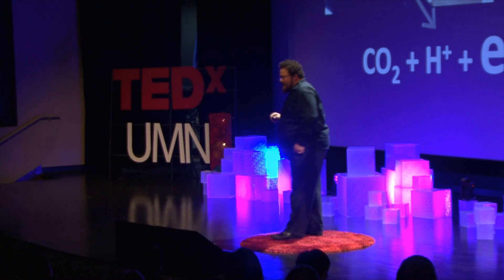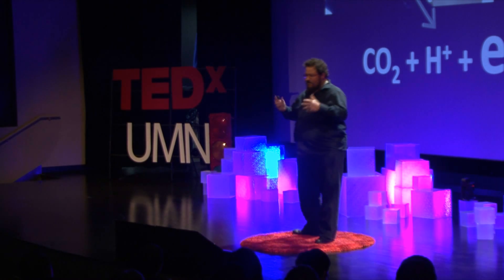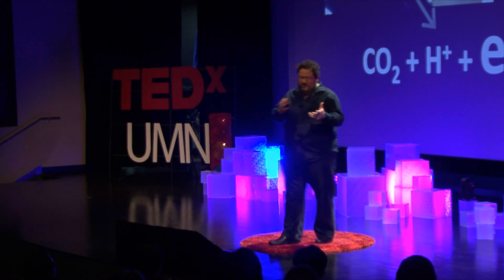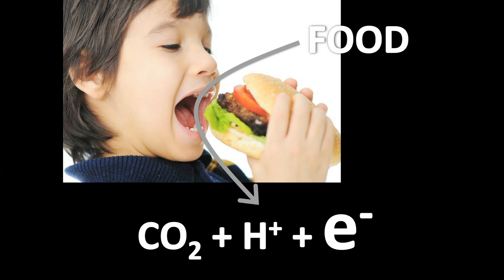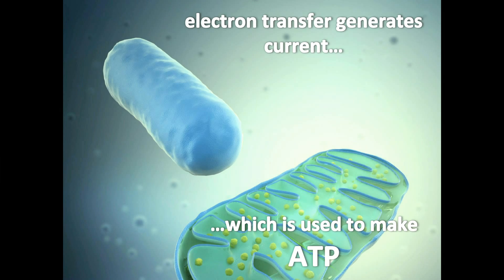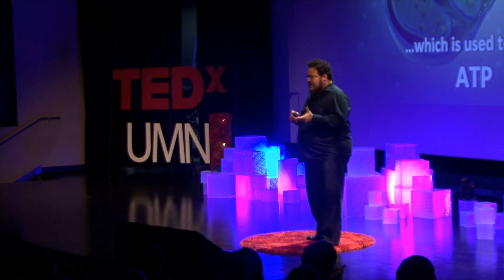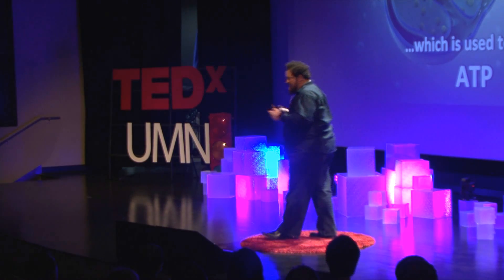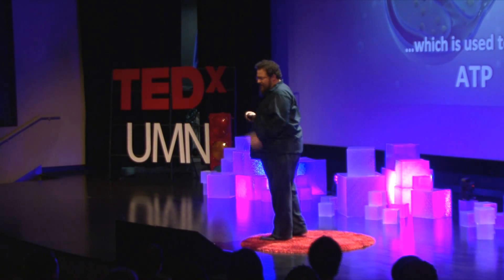The food that we eat is converted into CO2, carbon dioxide, protons, and electrons. Those electrons fly down a chain of proteins, pumping protons, and this current that gets generated allows us to make ATP. ATP is the currency of life — this is the energy of life.